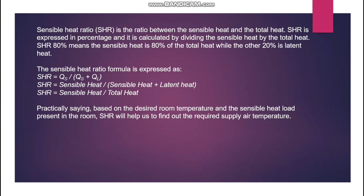To understand this properly, one very important term is the Sensible Heat Ratio (SHR). SHR is expressed as a percentage and is calculated by dividing sensible heat by total heat. For example, SHR = 0.80 means 80% is sensible heat and the remaining 20% is latent heat. The formula is: SHR = sensible heat / total heat. This is critical when going for coil selection.